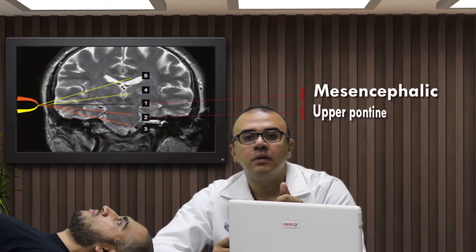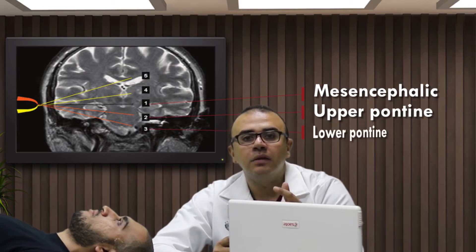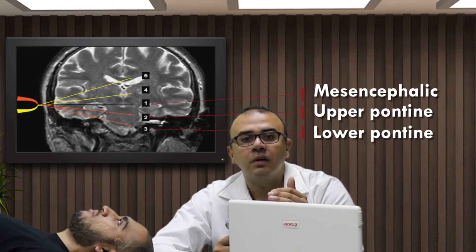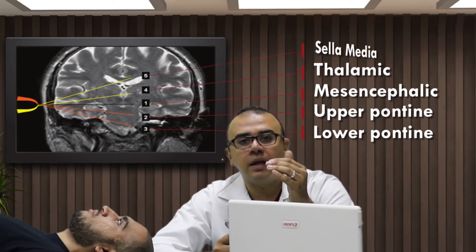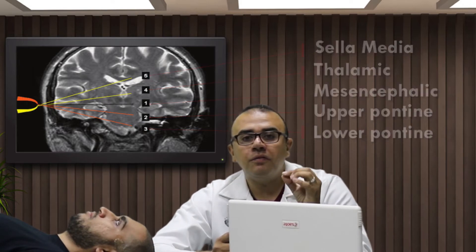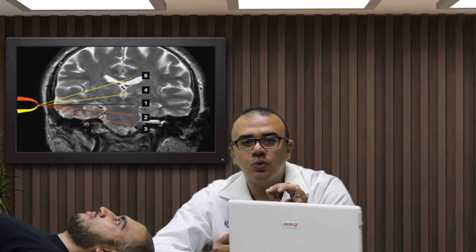This is very important. Before we start, we should know that through the trans-temporal window we have five axial planes: the mesencephalic plane, upper pontine plane, lower pontine plane, thalamic plane, and cell media plane. The difference between each plane is very narrow, about 10 degrees, and we should know the landmark for each plane.